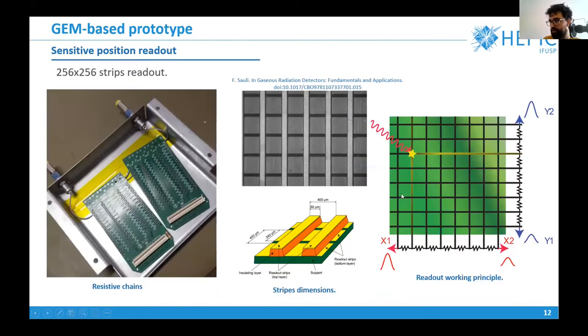We collect the signal here in this readout. This is a strip readout, it was made in CERN and it has 256 by 256 strips. These strips are disposed in different planes so the charge can be divided into these two directions X and Y. We use these resistive chains to divide the signal, and collecting the four signals here we can reconstruct the initial position where the charge hit the readout.